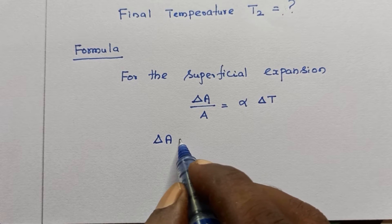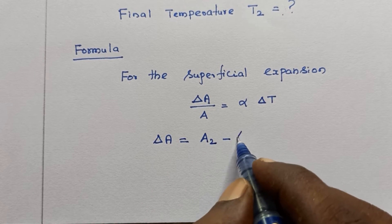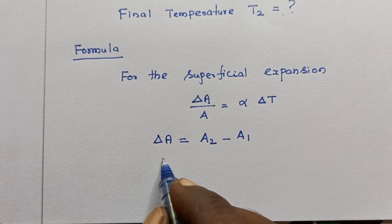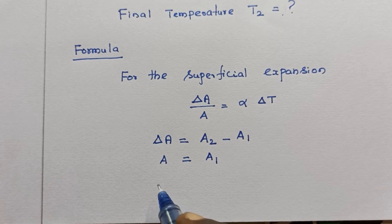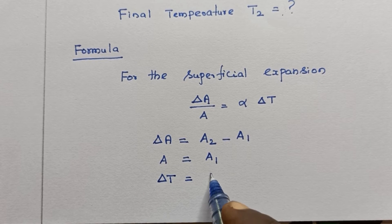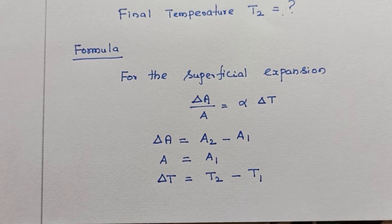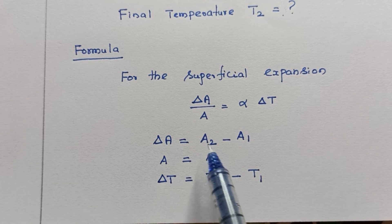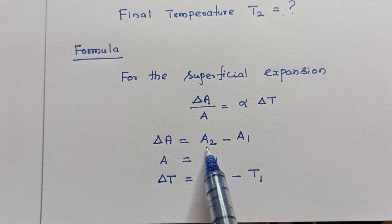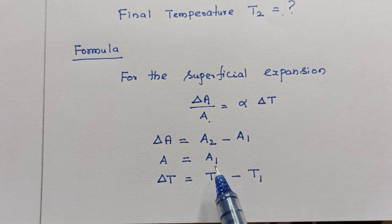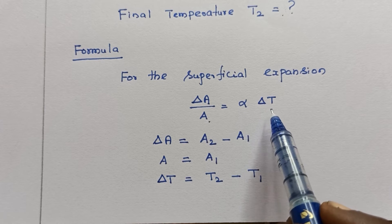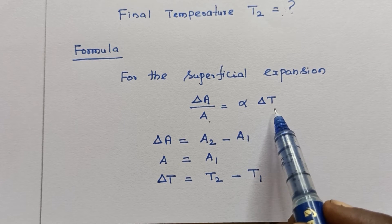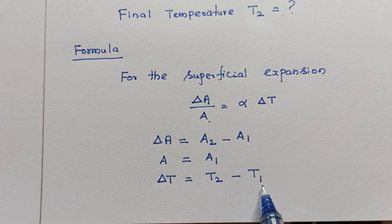The change in area ΔA equals final area minus initial area. A is the initial area, so we take it as A1. Alpha is the coefficient of superficial expansion. ΔT is the final temperature minus initial temperature. In this expression, ΔA can be determined because we know A2 and A1. A1 is the initial area, which is known. Alpha is given. We can find ΔT, and using ΔT equals T2 minus T1, since we know T1, we can find the final temperature T2.